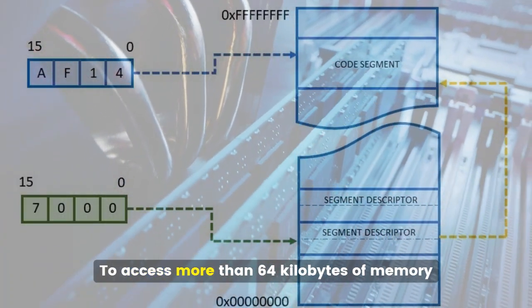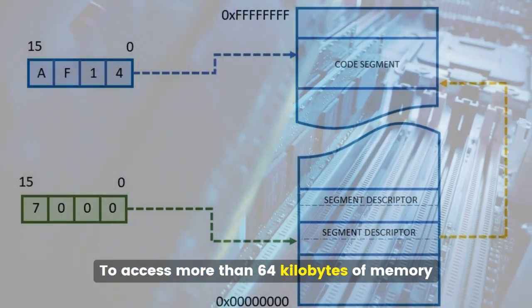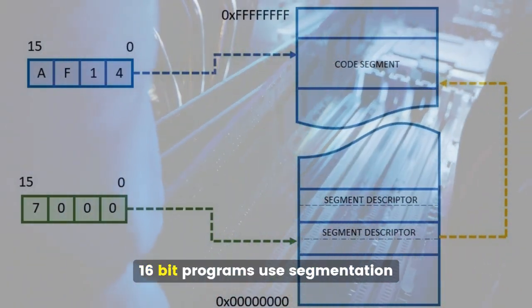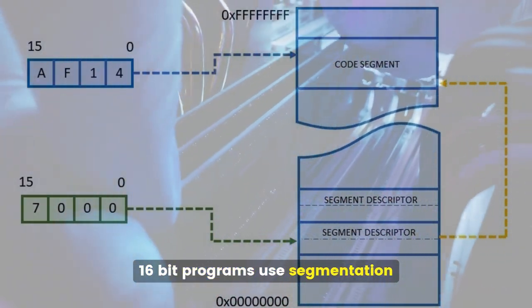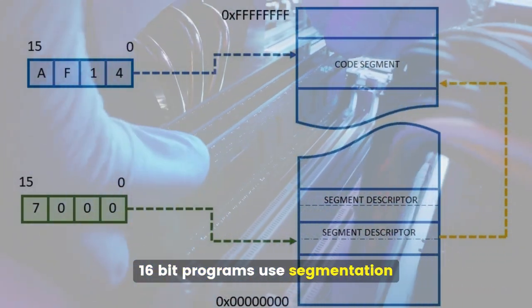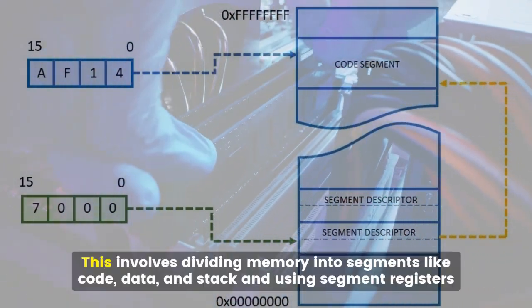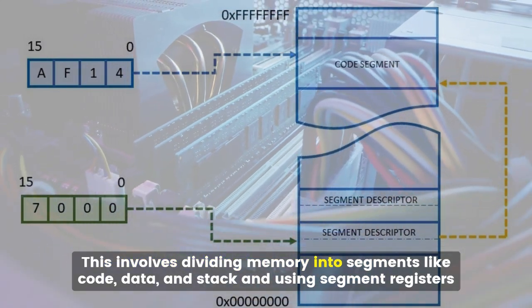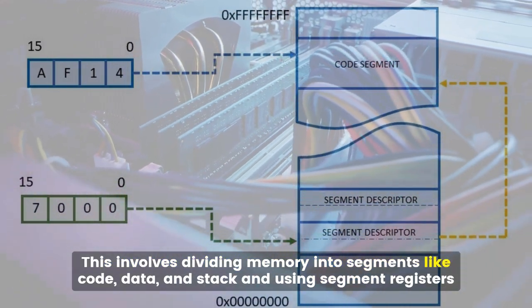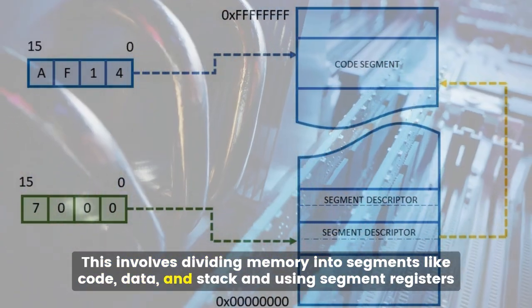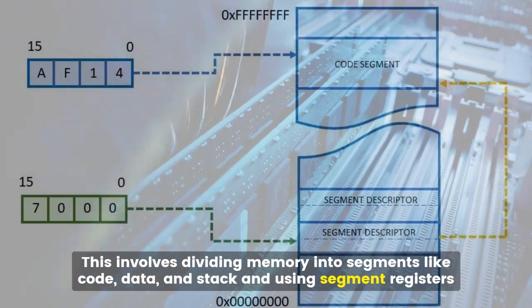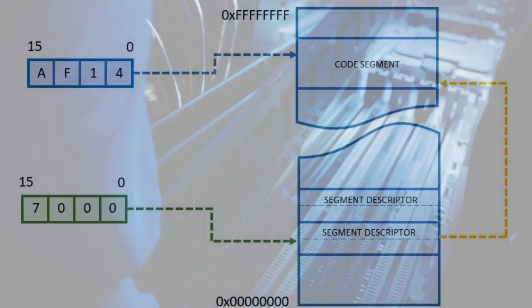To access more than 64 kilobytes of memory, 16-bit programs use segmentation. This involves dividing memory into segments — like code, data, and stack — and using segment registers to manage them.